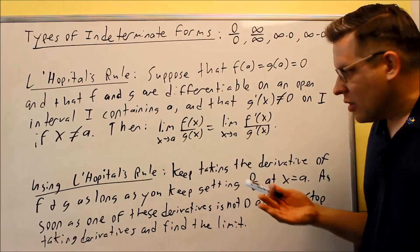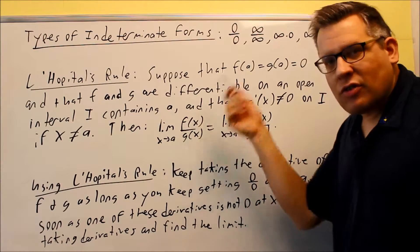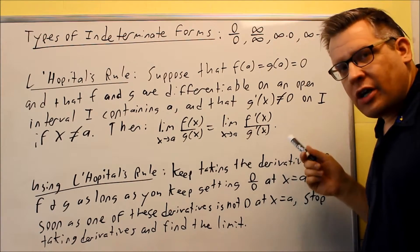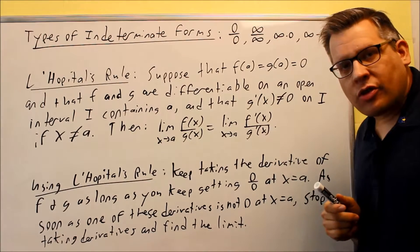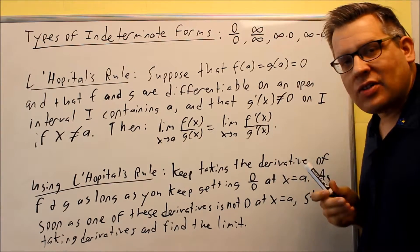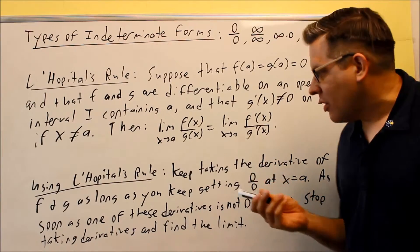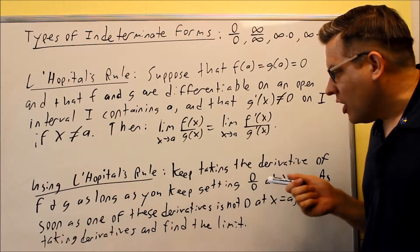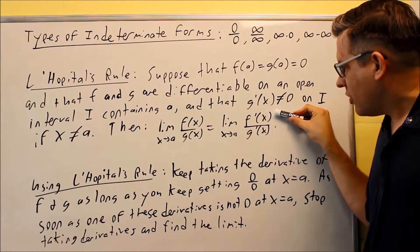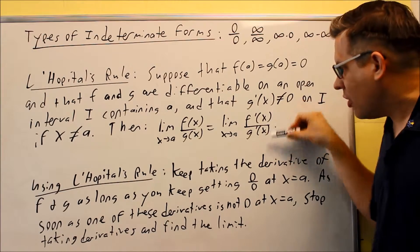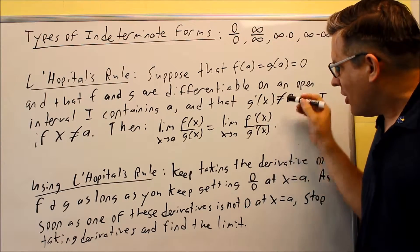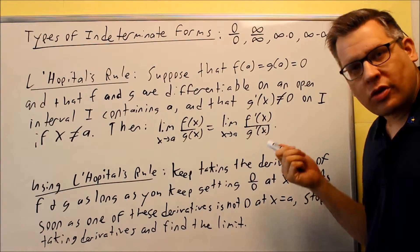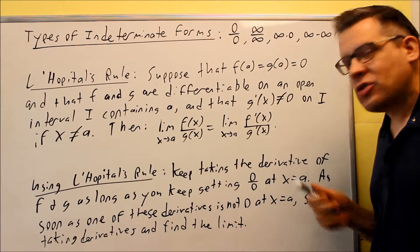The way you're going to use this is you start with this, and if you have a 0 over 0 situation, you're going to keep taking the derivative of the top and bottom. You keep on going all the way until you don't get 0 over 0 anymore, or if any one of these is not 0, then you're going to stop. Keep taking the derivative of f and g as long as you keep getting 0 over 0. Once you get a number, then you stop. Whatever number you end up with, that is going to be your limit.